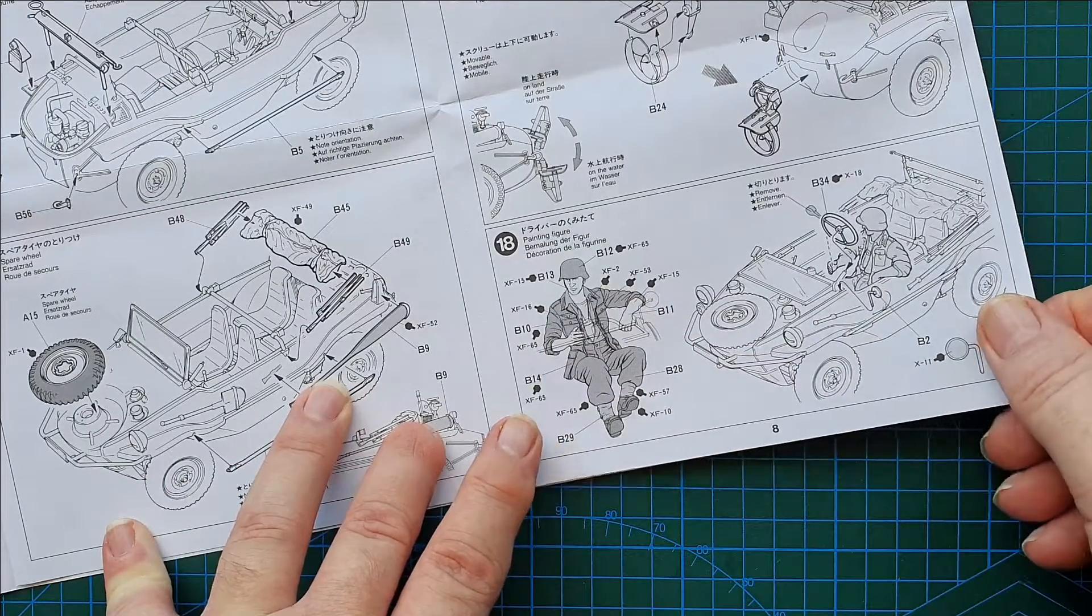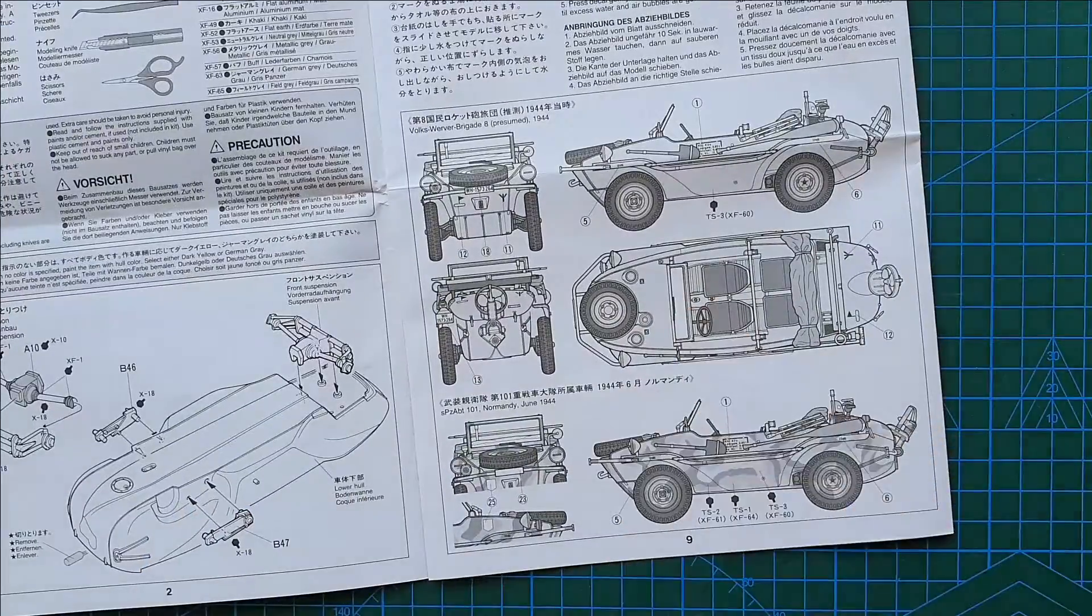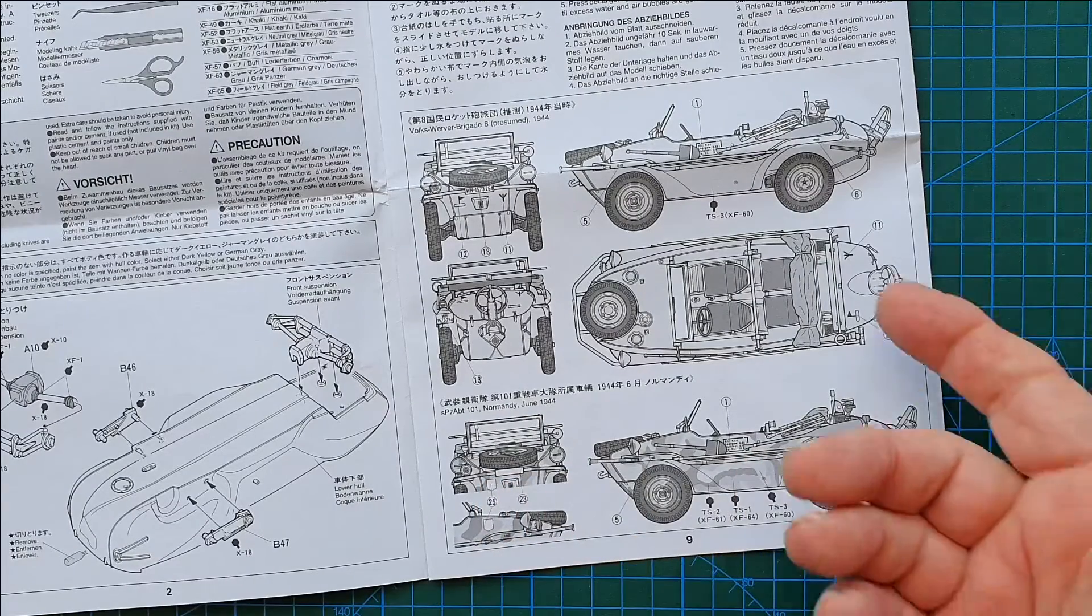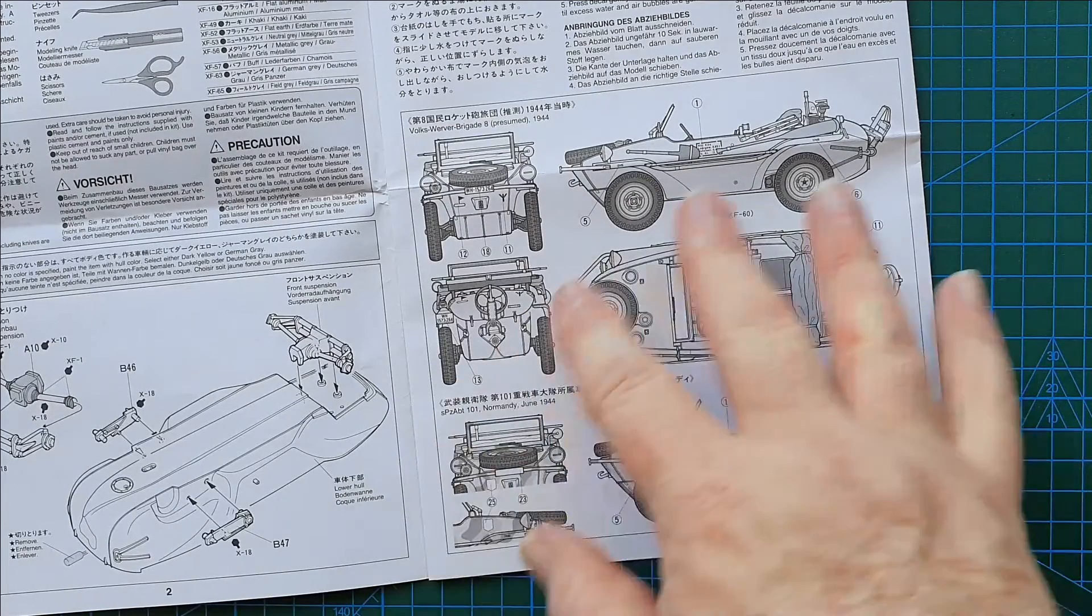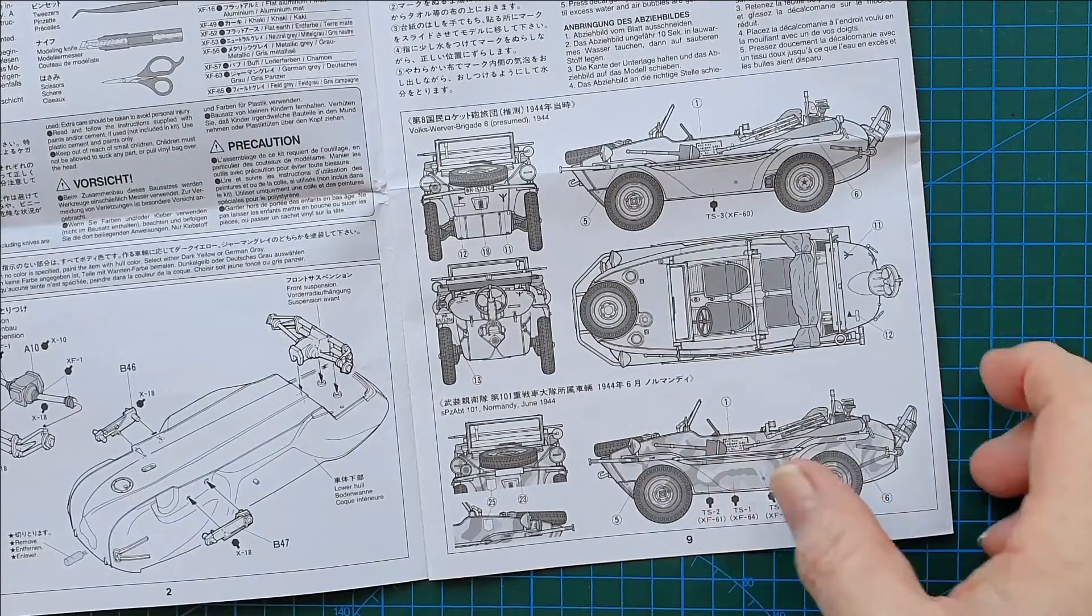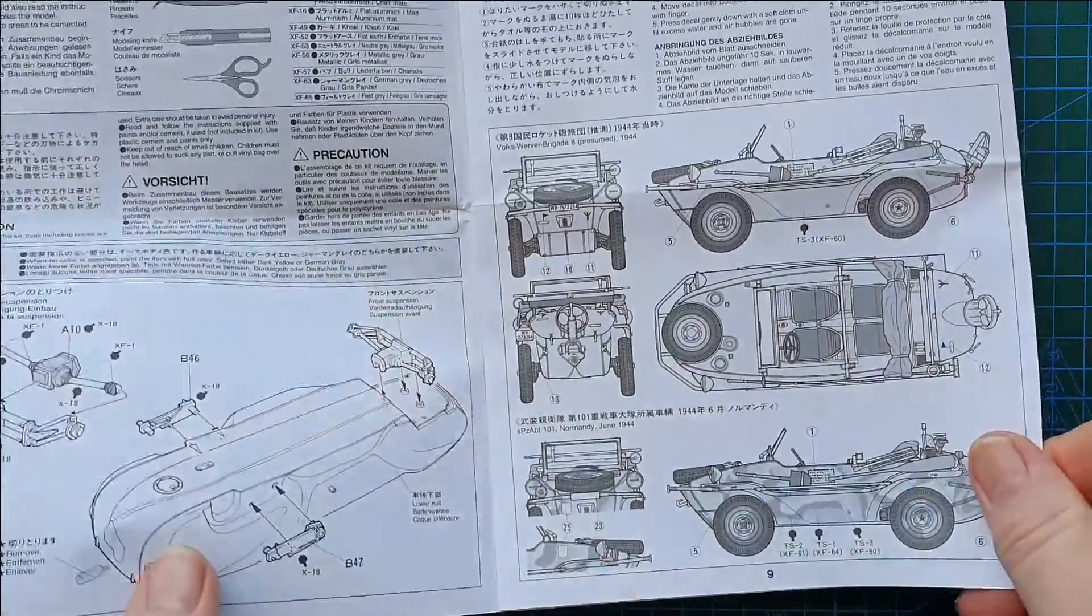All Tamiya colors. Fairly straightforward like I said. This is an easy build. And then basic painting. Okay, all over dark yellow. And then just with red brown or green splotches on it for Normandy. And there you go. She's done. Very easy. Quick build.